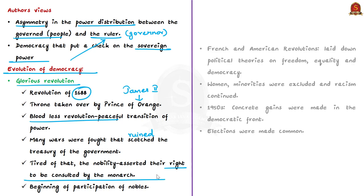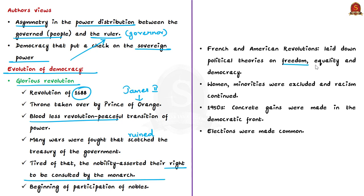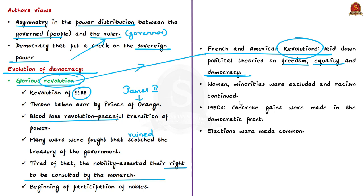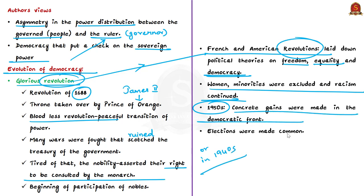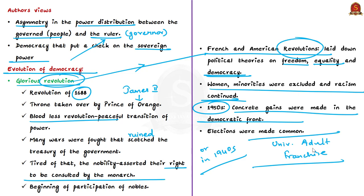The French and American revolutions laid down political theories of freedom, equality and democracy. Despite these theories, women and minorities were excluded from voting and racism continued. It was only in the 1950s, after the Second World War, that concrete gains were achieved on the democratic front. Elections became common whereby rulers returned for accountability periodically. The retreat of colonialism also strengthened the spirit of democracy.